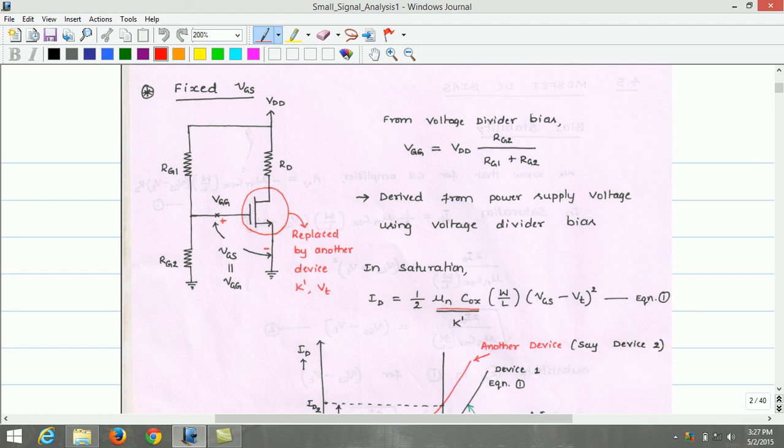This approach is not a good approach for biasing a MOSFET. To understand the reason for this statement, let us recall the drain current equation. Id equation in saturation region is Id equals 1 by 2 mu n COx which is also equal to K prime, W by L times VGS minus VT whole square. Let us call this equation 1.